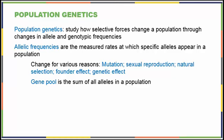Mutation, sexual reproduction, and natural selection are the big three. As we count allelic frequencies, we consider the entire gene pool or the sum of all the alleles in a population.